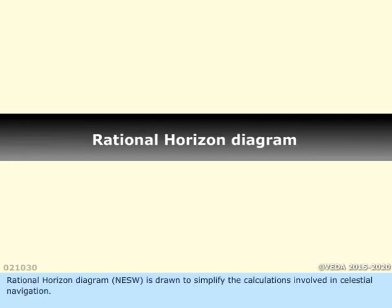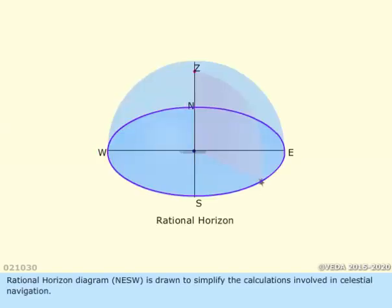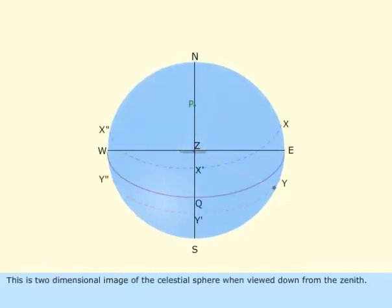The Rational Horizon Diagram is drawn to simplify the calculations involved in celestial navigation. This is a two-dimensional image of the celestial sphere when viewed down from the zenith.